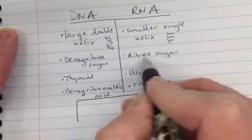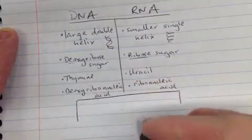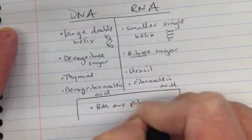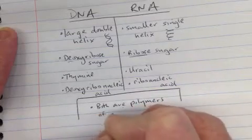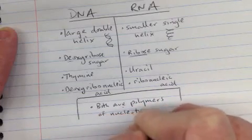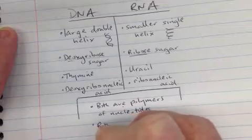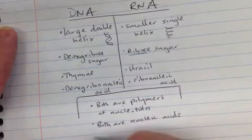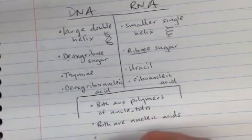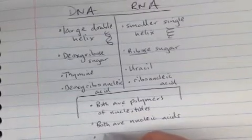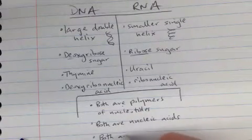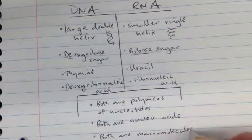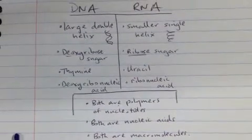They both take their names from the sugar that makes up the nucleotides. What do they have in common? Both are polymers of nucleotides. Both are nucleic acids. Both are macromolecules. So that's DNA versus RNA.